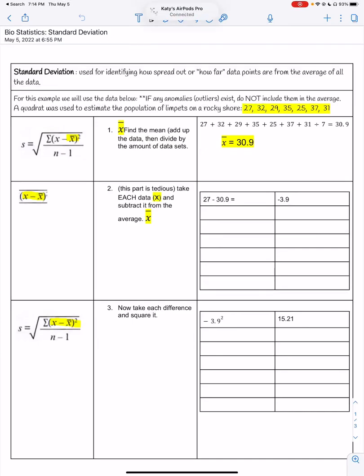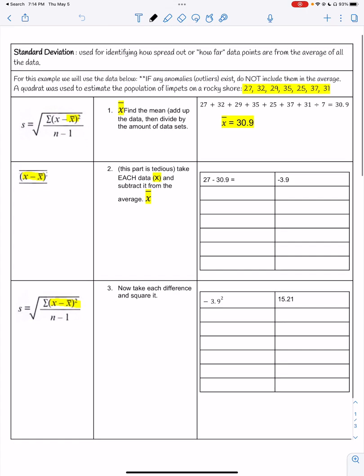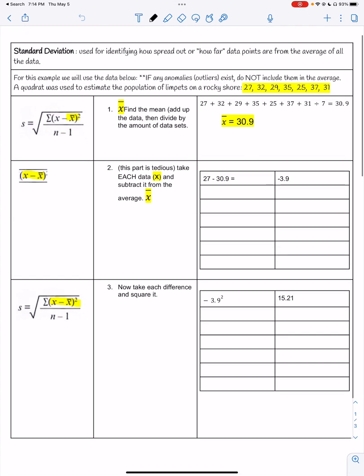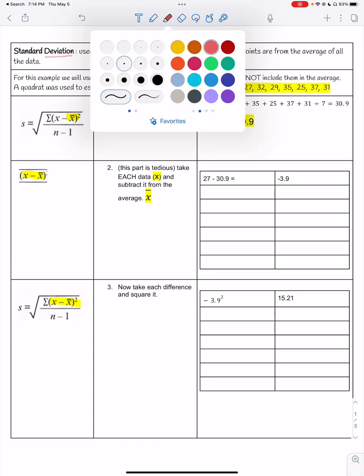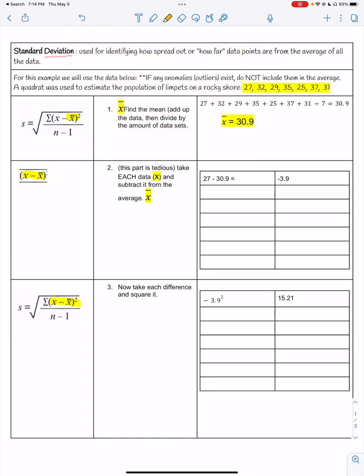It's just going to be a quick walkthrough for standard deviation. It's on the A-level paper four exam, could also be on paper three if you had to look at some data. The purpose for standard deviation - something's deviating, it's moving away from the norm. Standard deviation is used to identify how spread out or how far data points are from your average.